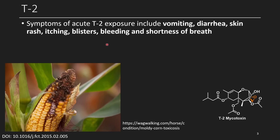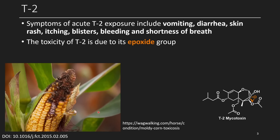When you're exposed to T2, you can get symptoms such as vomiting, diarrhea, skin rash, itching, blisters, bleeding, and shortness of breath. It's definitely not something you want to get exposed to. You can see this corn is absolutely terribly moldy — you'd look at that and you'd probably know better than to eat it.